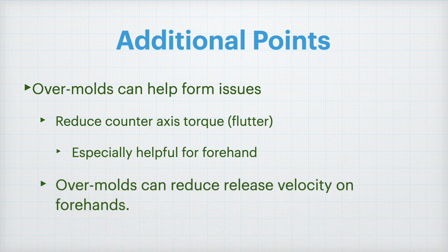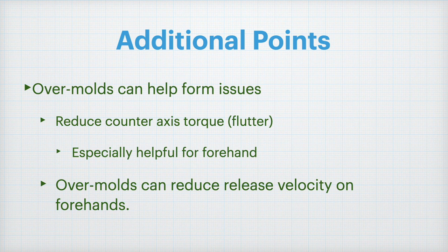Also, overmolds can reduce release velocity on forehands. So depending on how good your form is, an overmold can be very beneficial for reducing that counter axis torque. Or if you do have a smooth release, the overmold may impact your release velocity, ultimately costing you some distance.